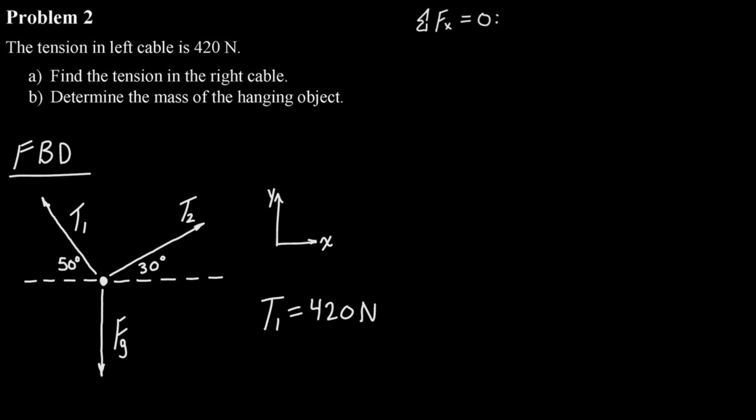Any force that's pointing to the right is going to be positive, and then any force that's pointing to the left is going to be negative. So what we can write out here is T2 times cos 30, and we're going to make that one positive. So that's going to take the x component of tension number two, and then we'll subtract T1 cos 50. So that'll take the x component of T1, which is pointing to the left, or the negative x direction.